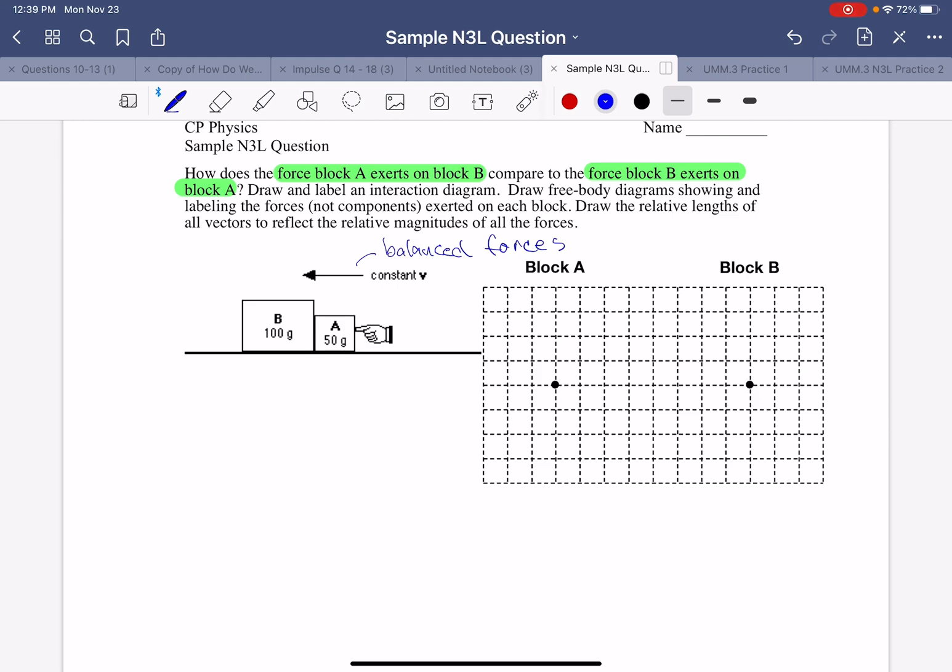So first it says to draw an interaction diagram. So I have block B interacting with block A with the normal force. They're both interacting with the floor. It doesn't say there's no friction, so I'm going to put a friction force and a normal force for each block. And they're both interacting with the earth. So there's the interaction diagram.